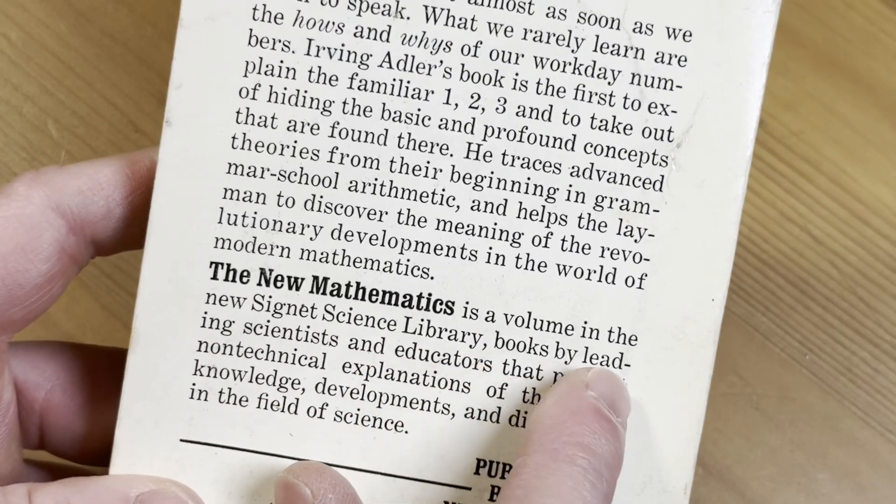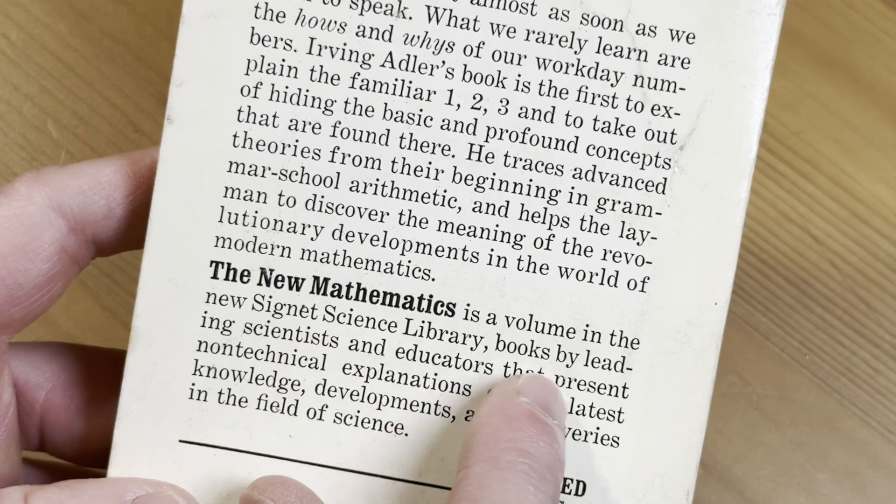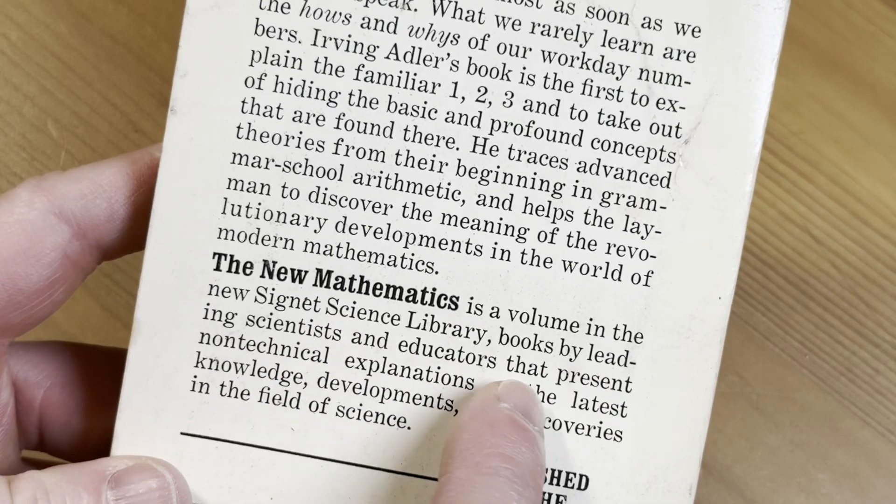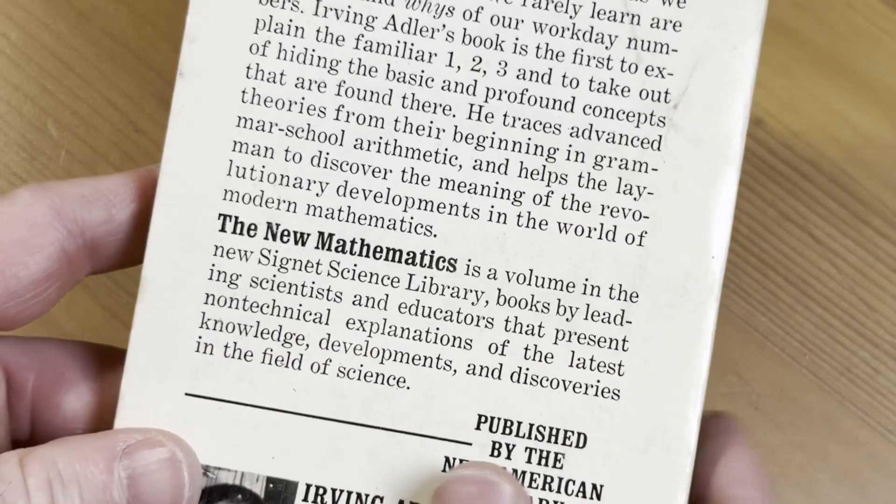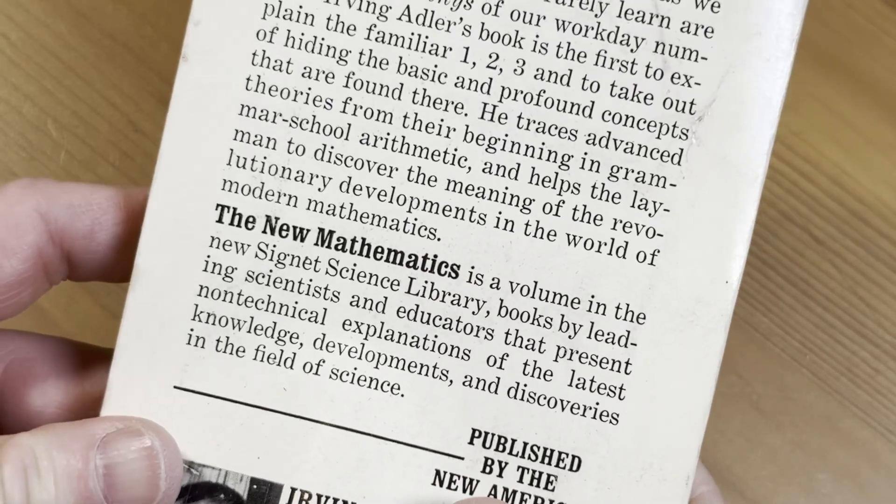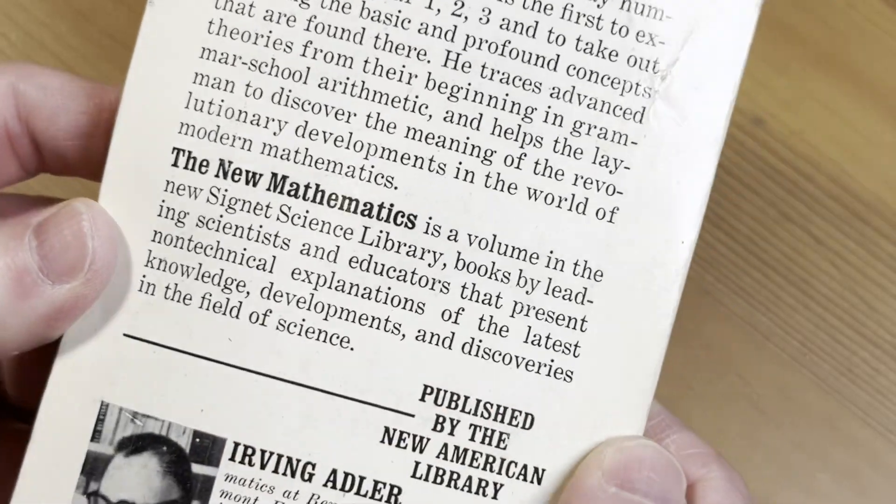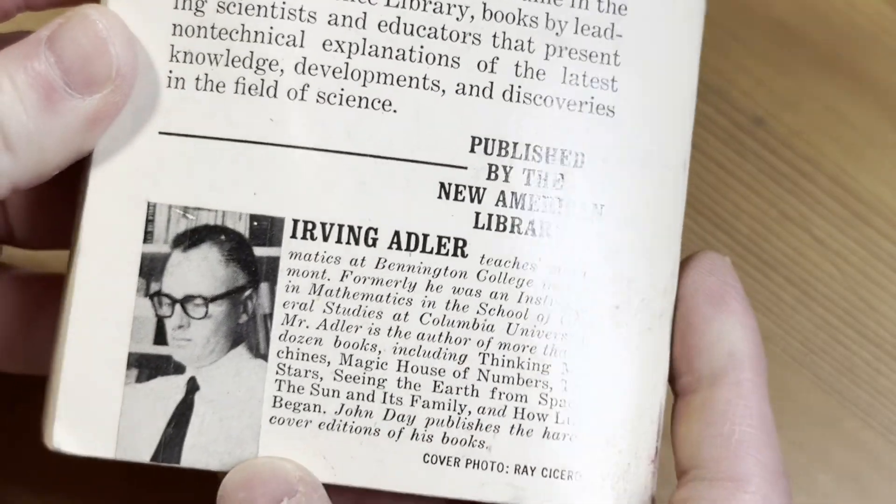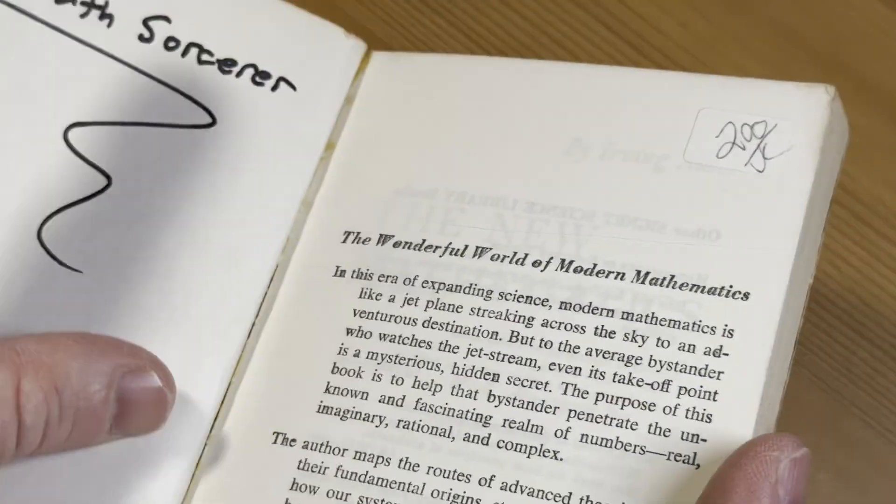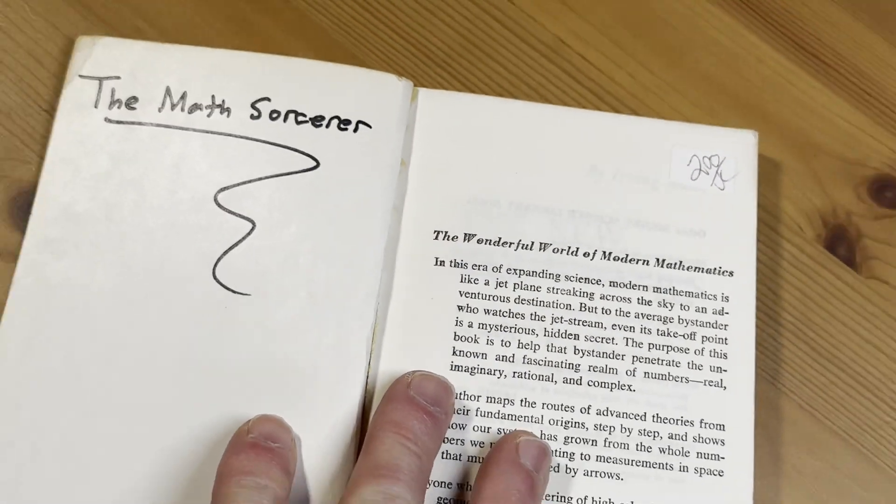The New Mathematics is a volume in the New Signet Science Library. Books by leading scientists and educators that present non-technical explanations of the latest knowledge developments and discoveries in the field of science. And here's Irving Adler. Let's open it up. Let's take a look inside here.